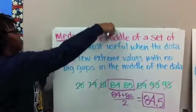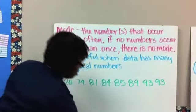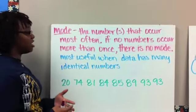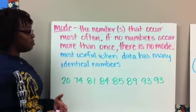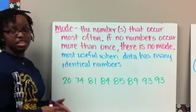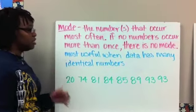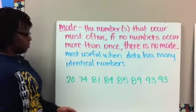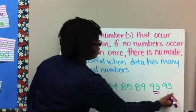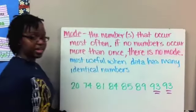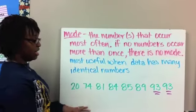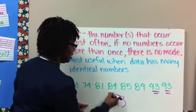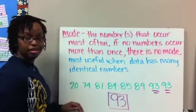All right? Let's go ahead and move on to mode. Mode is the number or numbers that occur most often. If no numbers occur more than once, then there's no mode. It's most useful when the data has many identical numbers. So we're just looking for which one occurs the most often. And in this set of data, we've got 93 twice, and that's more often than any of the other numbers. So our mode is 93.